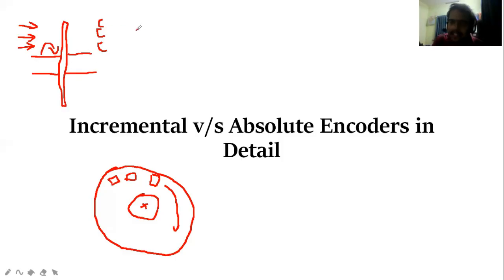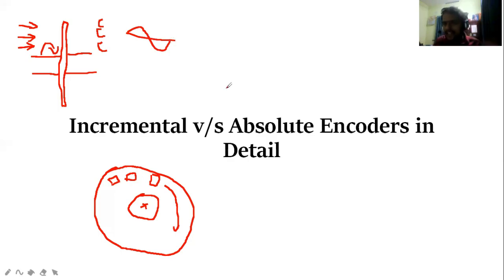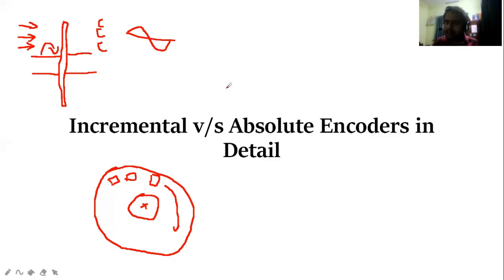One of the outputs here is called a sinusoidal output. When it comes to the sinusoidal output, a circuit performs signal conditioning — that is a conversion. That's why we need to understand how the encoder works.